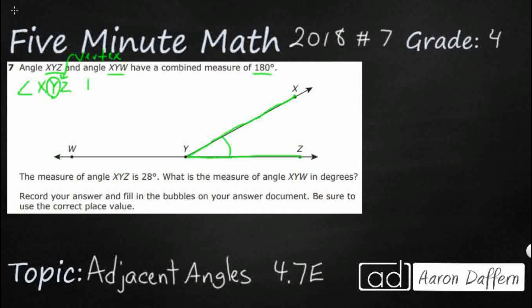So XYZ, and then if we add, because it says we have a combined measure, so we want to add both of these angles. And then we've got X, Y, W. So we've got X, we're going to come back down again to Y, but we're going to go way over here to W. And then you see Y is our vertex again. But now we've got this big angle right here.